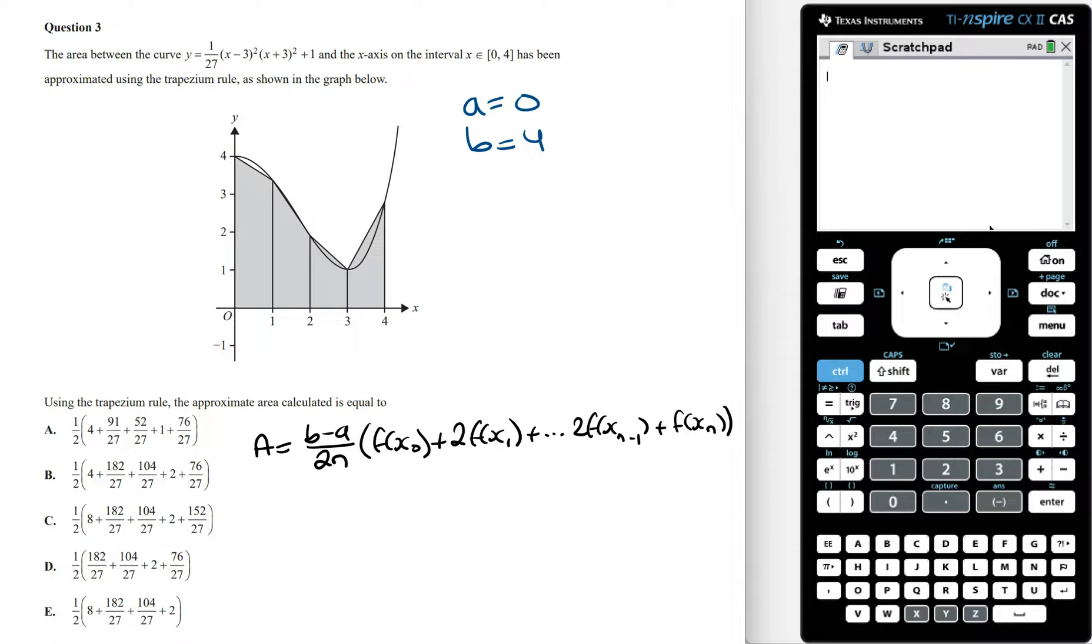The value of n is going to be the number of trapeziums we have, and so this is also going to be 4. x0 is going to be the starting point. We can see the width of each of these trapeziums is one unit, and so this is going to be x1, x2, x3, and x4.